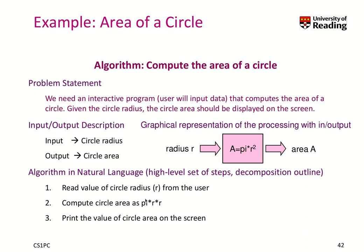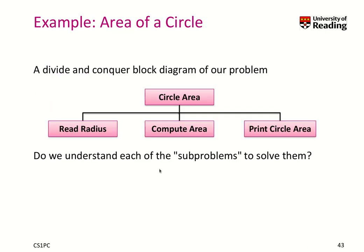Maybe there is another problem, like what does pi mean — we may have to define that. But basically that's a very simple problem that we have just solved. A divide and conquer block diagram of our problem could be: program circle area → read the radius → compute the area → print the circle area. And if we understand each of the sub-problems sufficiently to solve them, then we are able to compute the circle area and write this little program. If we don't, then we further define the steps we don't understand yet.